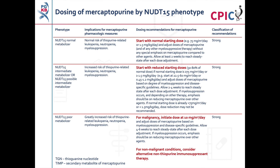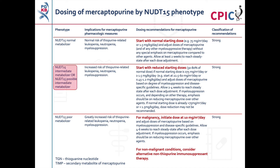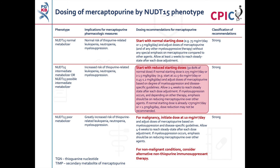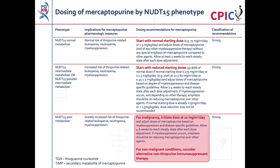These are the CPIC dosing recommendations for mercaptopurine by NUDT15 phenotype. Patients who are NUDT15 normal metabolizers are at a normal risk of thiopurine-related myelosuppression and can be given the normal starting dose of mercaptopurine. This is a strong recommendation. Patients who are NUDT15 possible intermediate metabolizers are at an increased risk of myelosuppression and should be started at a reduced dose. This is a strong recommendation. Patients who are NUDT15 poor metabolizers are at a greatly increased risk of myelosuppression; alternative therapies should be considered for non-malignant conditions, and in cases of malignancy, patients should be started at a drastically reduced dose of mercaptopurine. This is a strong recommendation.